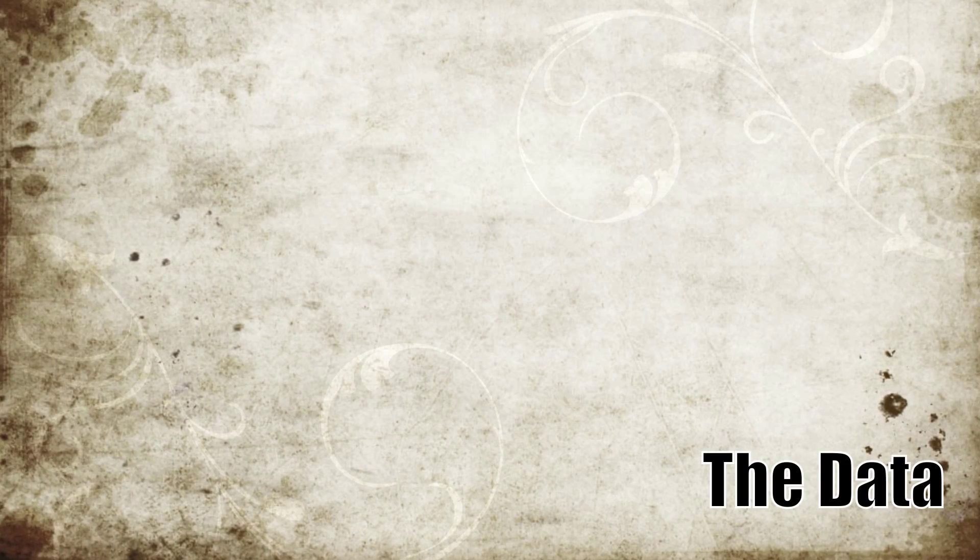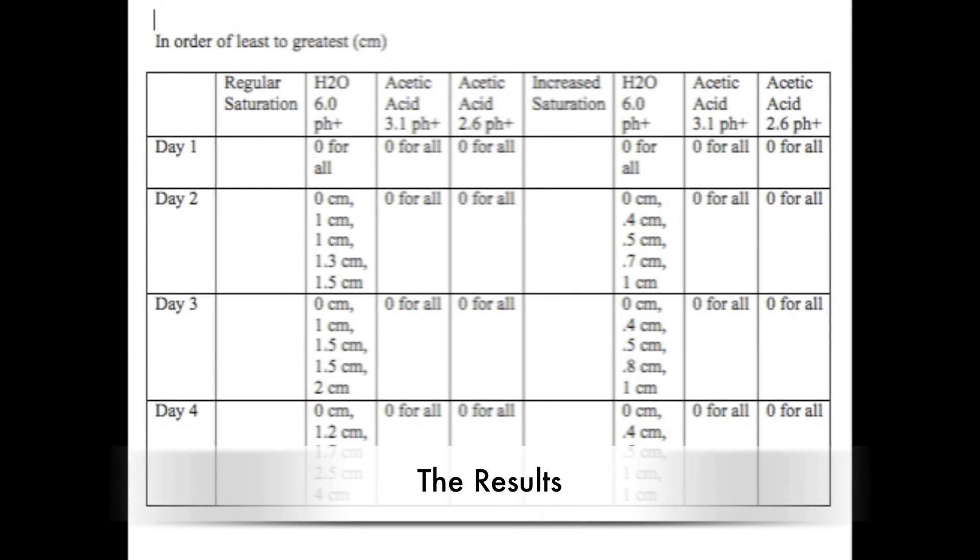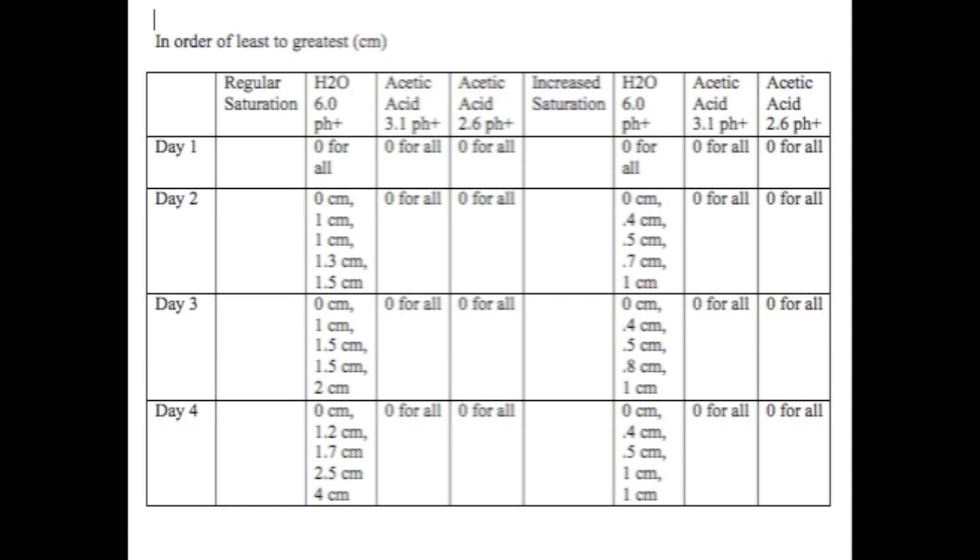We checked the seeds over a course of a week to see if we had any results. We recorded the length of the seeds 4 times. We found the seeds cannot grow in the solutions with 2.6 and 3.1 levels of acidity. However, the seeds grew in the 6.0 solutions. This shows the seeds cannot grow in an acidic environment.